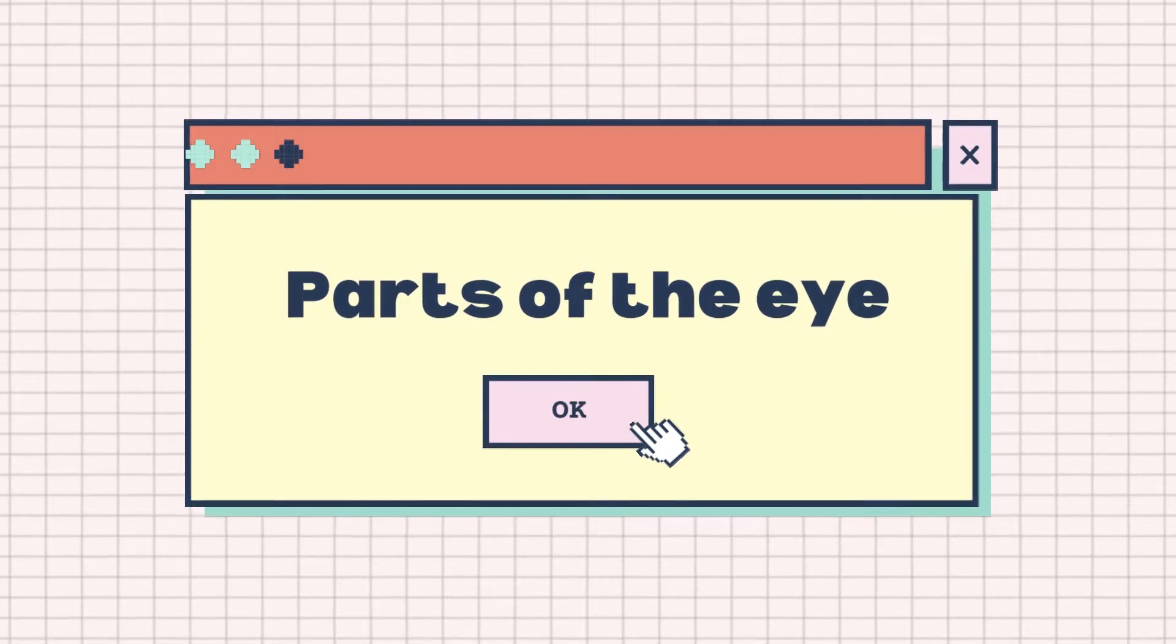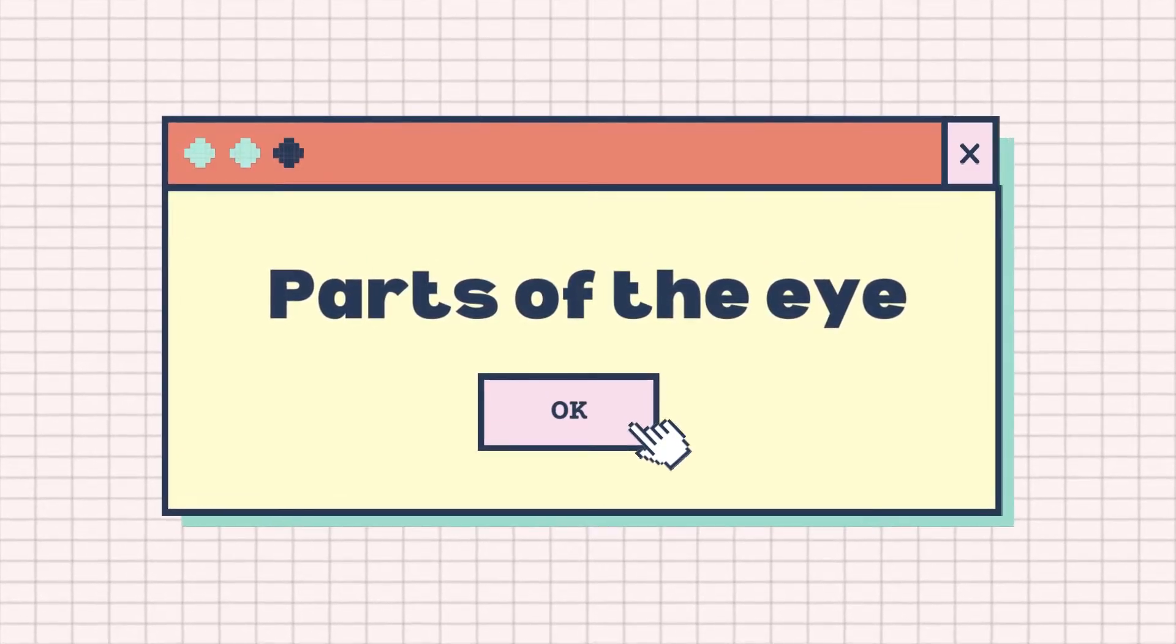The eye is made out of several parts and these parts work together and function as a whole to aid in sight.